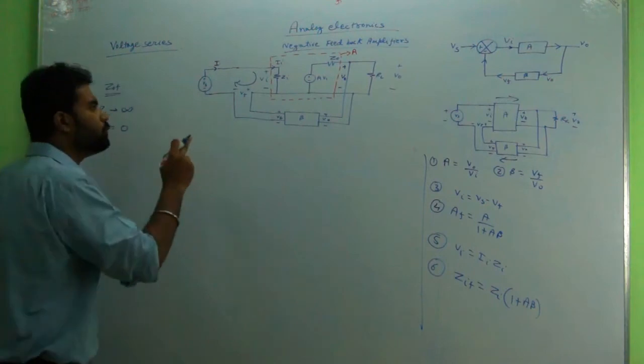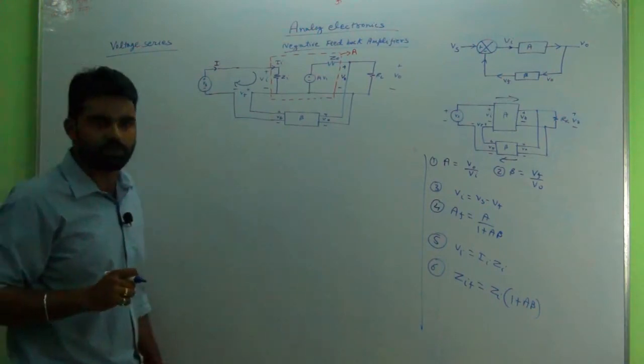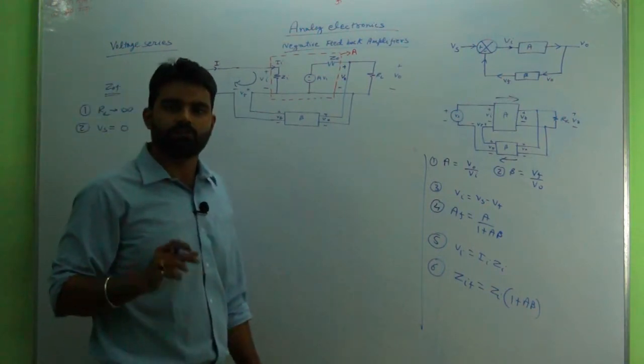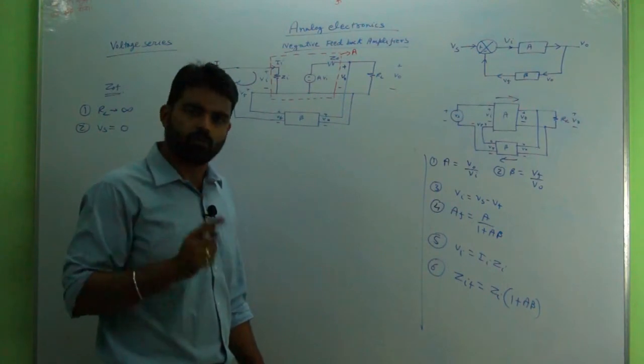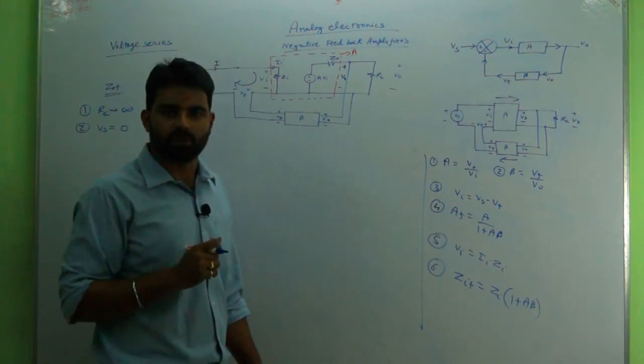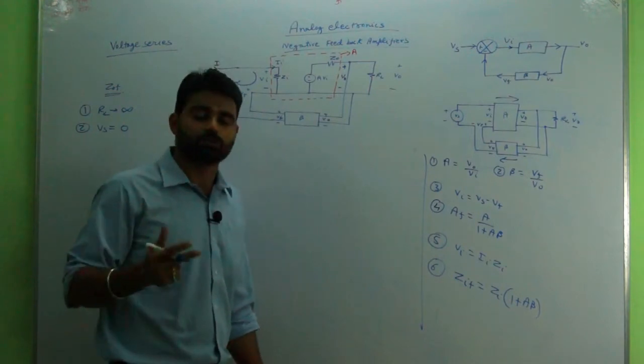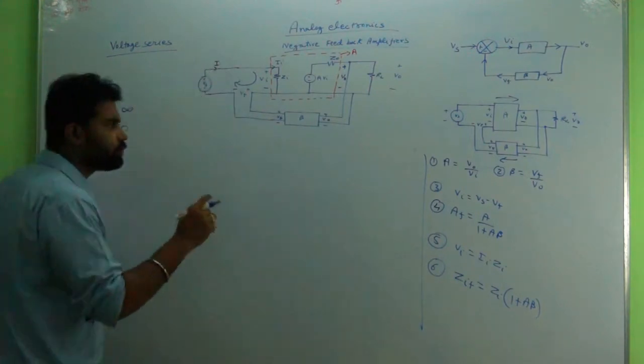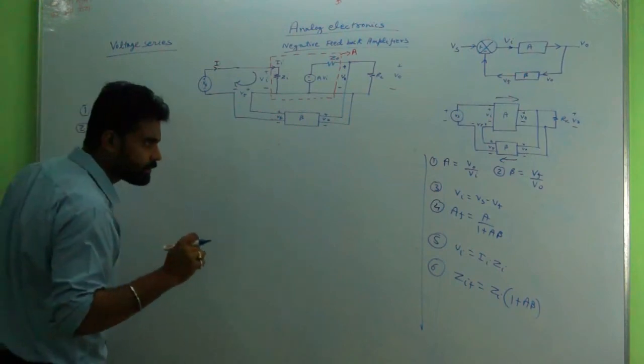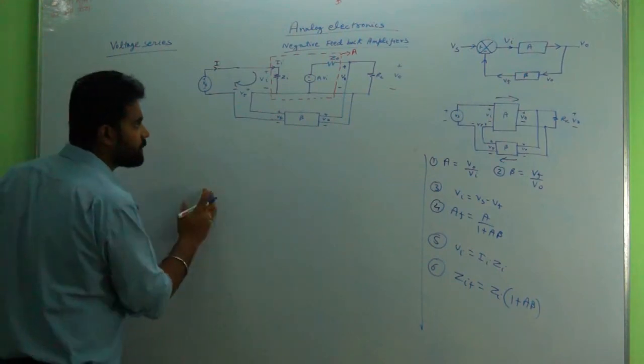These are the two substitutions or conditions we will always take whenever we are considering output impedance, whether it will be voltage series or voltage shunt or current series or current shunt, it doesn't matter. These are the two conditions we should always take.